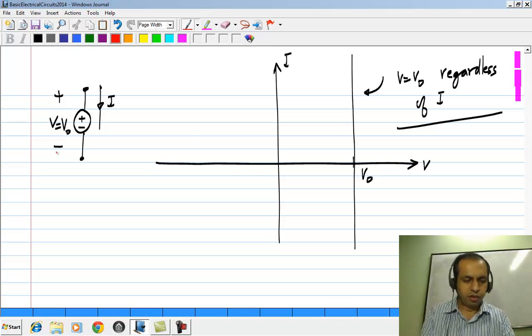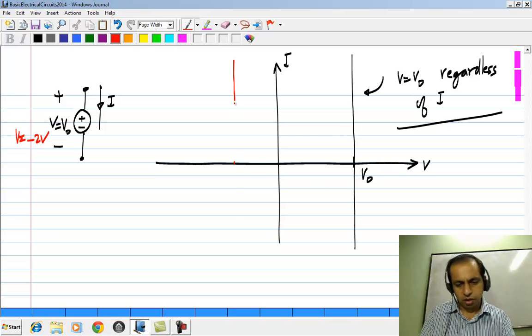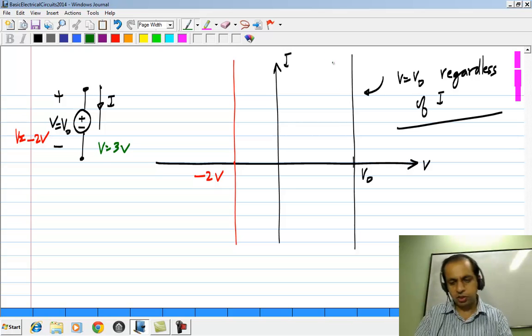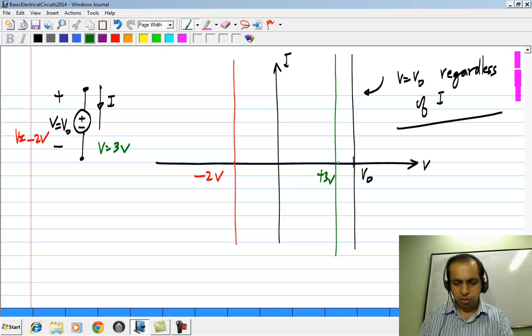If V happen to be minus 2 volts, then this vertical line would be at minus 2 volts. If we happen to be 3 volts, the vertical line will be at plus 3 volts.